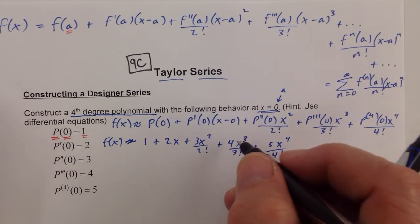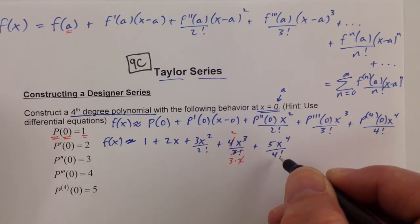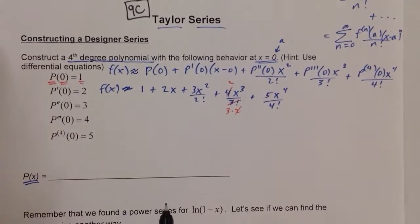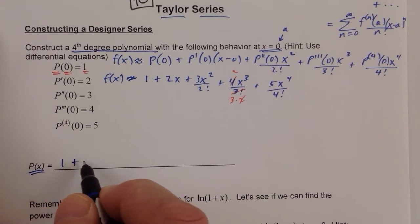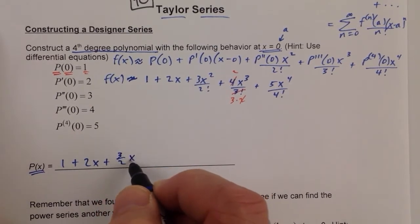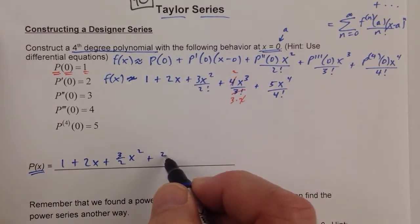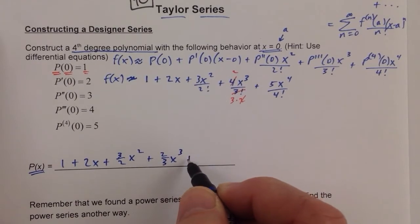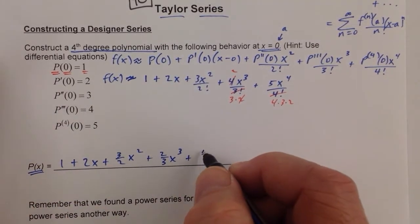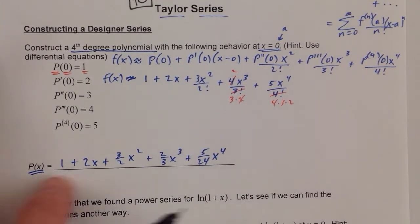Let's simplify this a little bit. 3 times 2 — the 2's cancel. So p of x, the polynomial, equals 1 plus 2x plus 3 halves x squared, plus 2 thirds x cubed — we cancelled the 2 there — plus 5 over 24 x to the fourth, since 4 factorial is 24. That's the fourth degree polynomial.